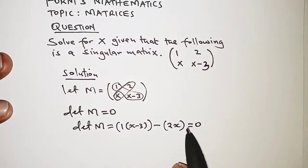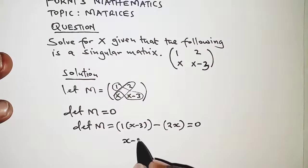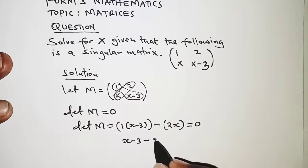So with this equation we'll be able to get the value of X. So here we have X minus 3 minus 2X is 0.